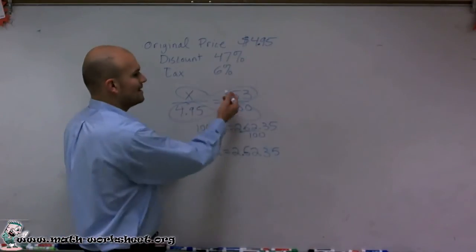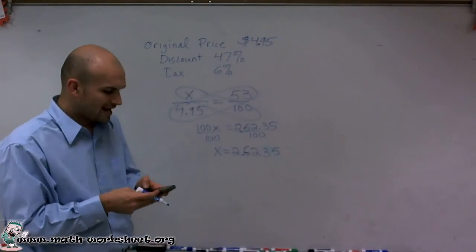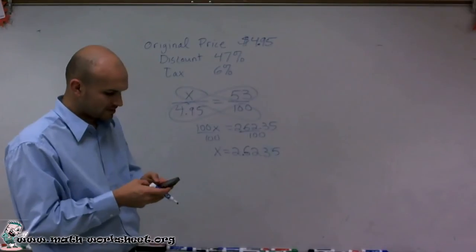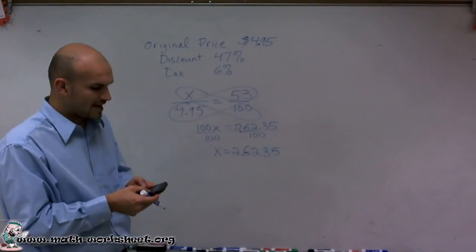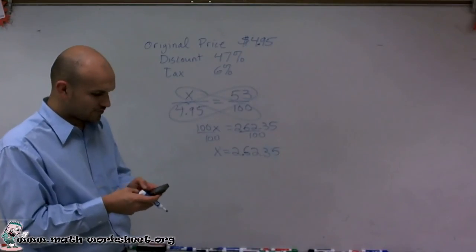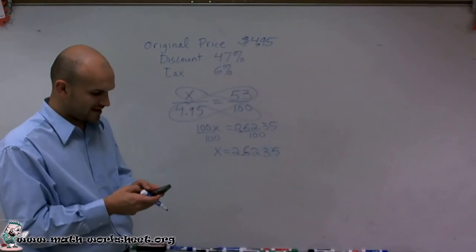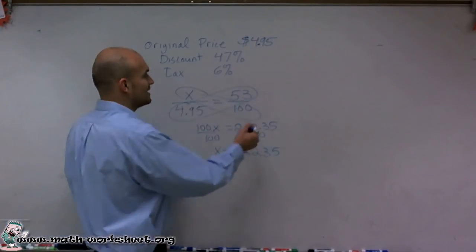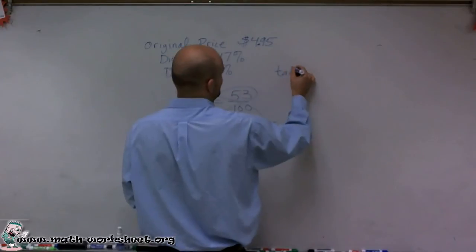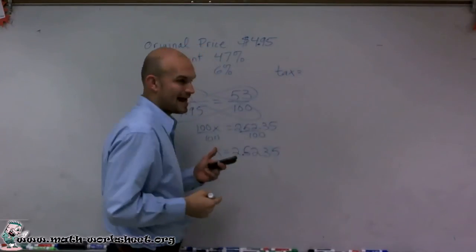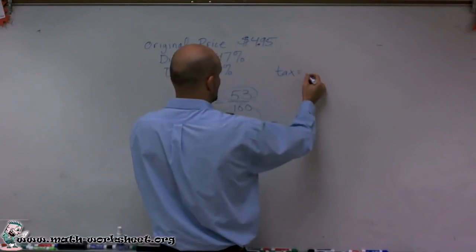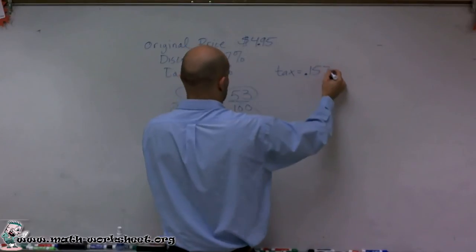So what I can simply do, rather than doing proportions like I did before, I can just take 0.06 and multiply it by 2.6235. And when I do that, I get the tax. The amount that we're going to add as tax is going to be 15 cents.